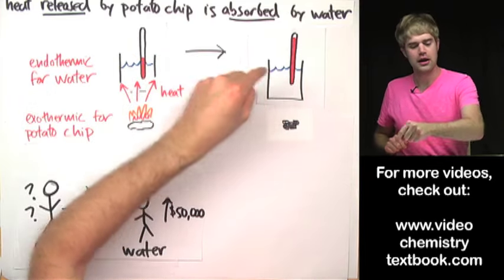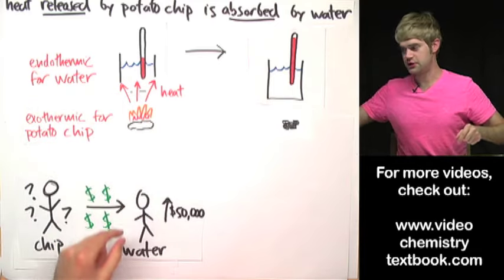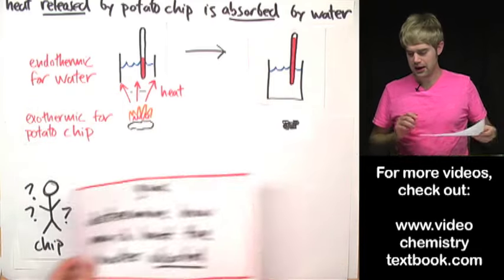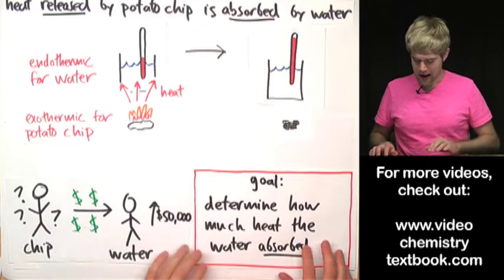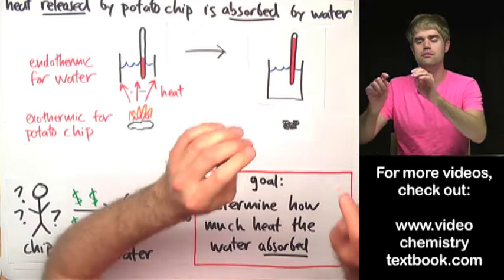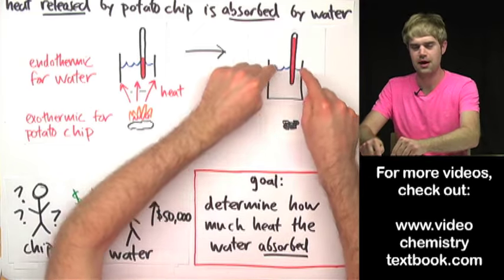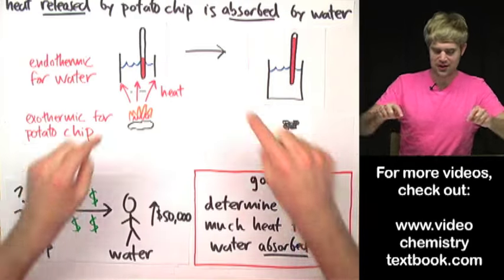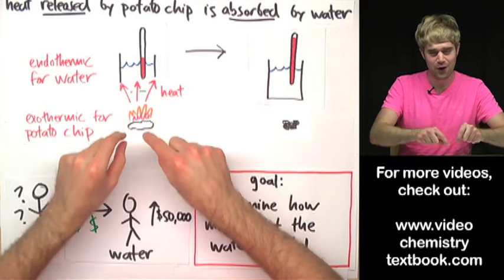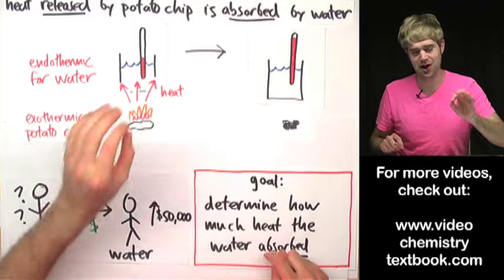Now, in order to find out how much heat was released, all we have to do is determine how much heat the water absorbed. Solving for how much heat the water absorbed will tell us how much heat the potato chip lost.